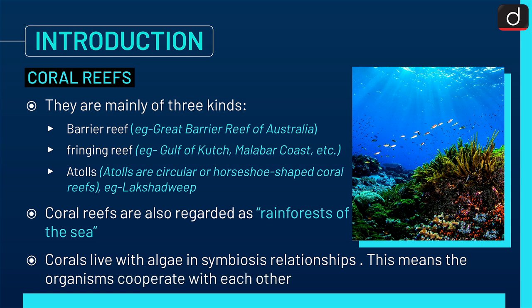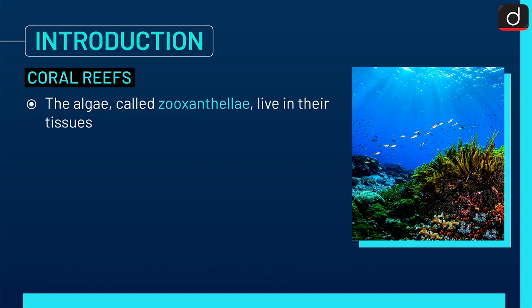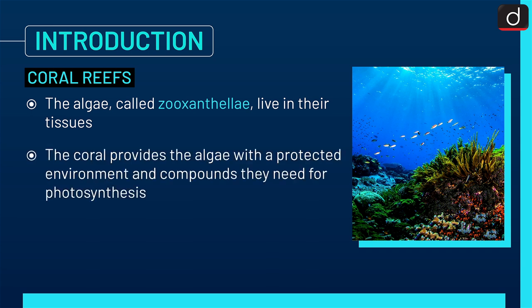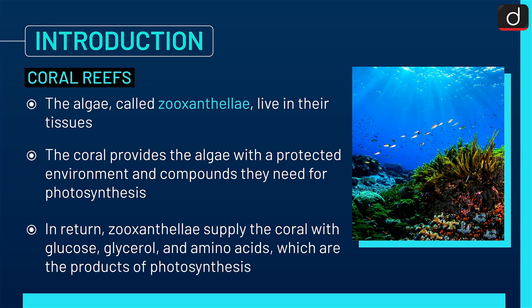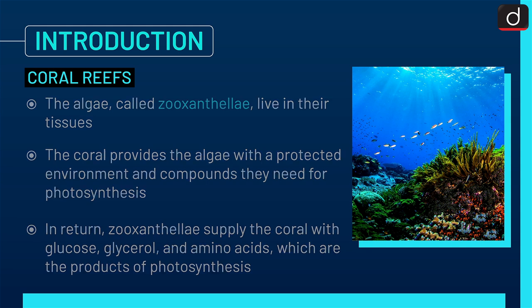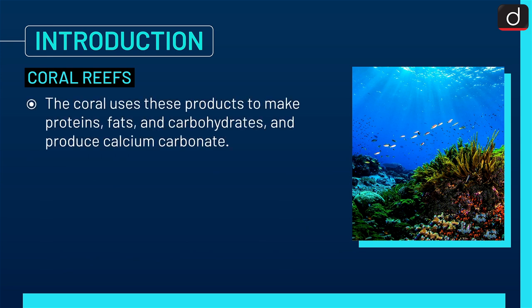Corals live with algae in a symbiotic relationship, meaning the organisms cooperate with each other. The algae, called zooxanthilae, live in their tissues. The coral provides the algae with a protected environment and compounds needed for photosynthesis. In return, zooxanthilae supply the coral with glucose, glycerol, and amino acids — products of photosynthesis — which the coral uses to make proteins, fats, carbohydrates, and to produce calcium carbonate.